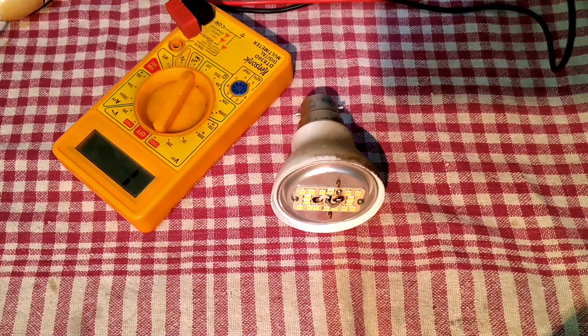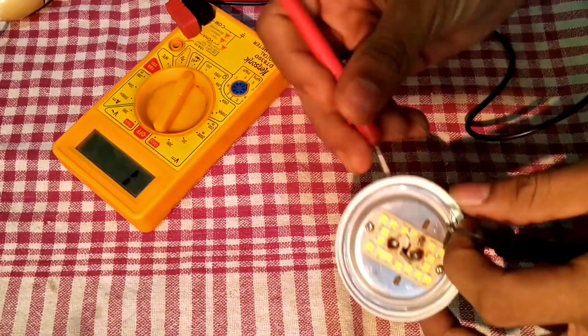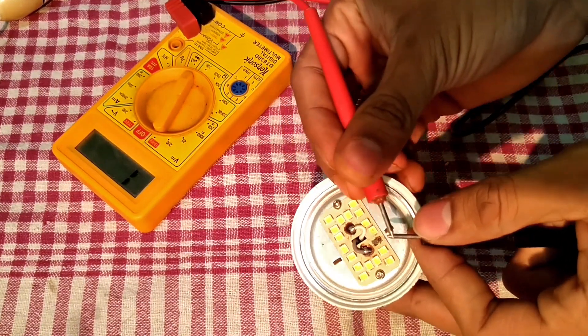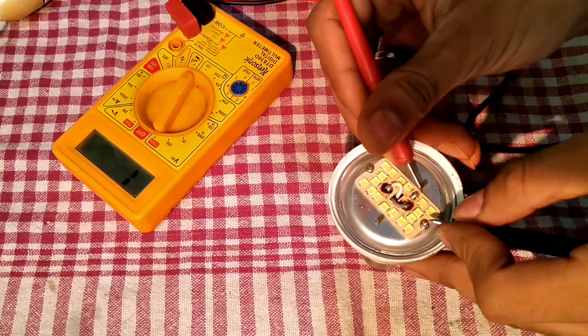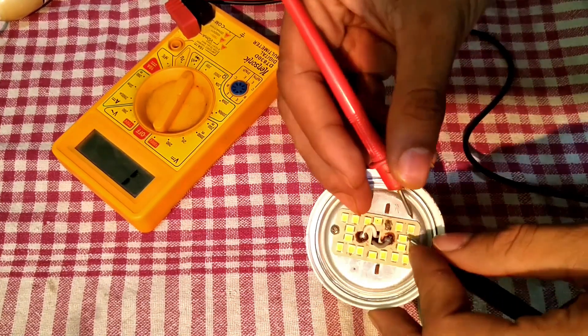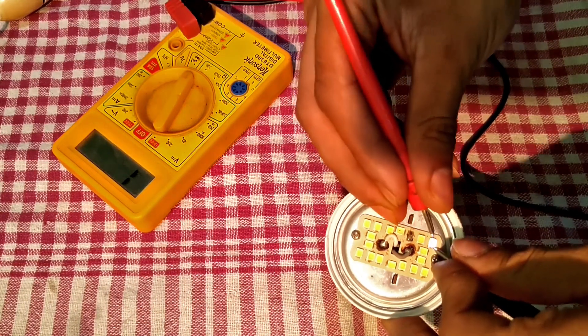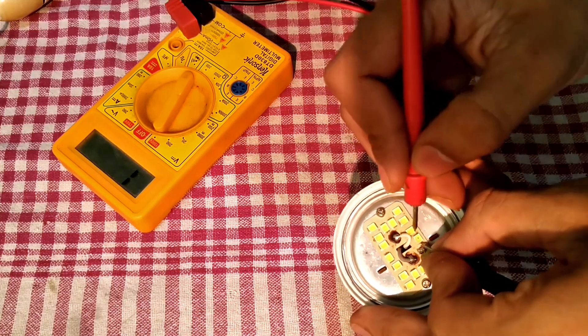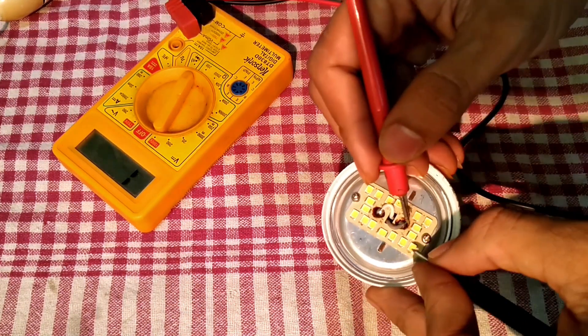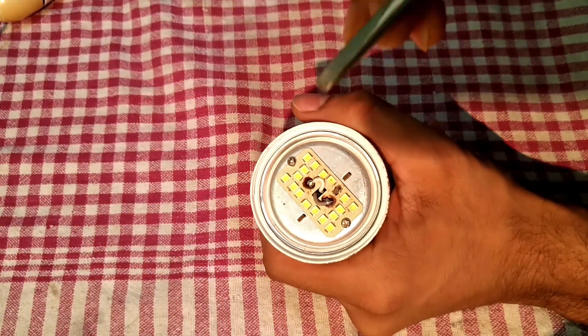Another way to check if an LED is damaged is to check continuity with a multimeter. If the circuit is continuous, the multimeter will make a sound. Just place it over the LEDs - if the LED is working, it will glow like this. If the LED is not working, it will not glow. It's as simple as that.